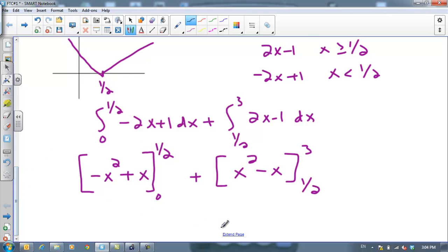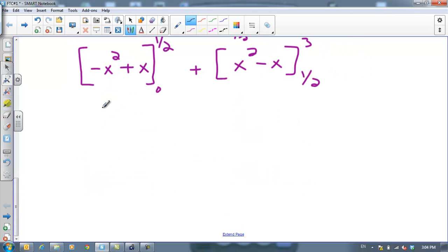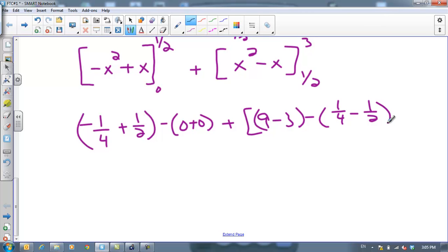So we're going to plug them in first. So we plug in our 1 half. 1 half squared, of course, is 1 fourth. And then we'll plug the 0 in. Well, that's just going to be 0 plus 0. That's not really necessary. But I'm going to write it to show you that I did plug it in. And then plus, plug in our 3, we get 9 minus 3. And then plug in our 1 half, and we get 1 fourth minus 1 half. And I am not going to simplify that. You could get the exact area, but you're not going to waste your time with that.